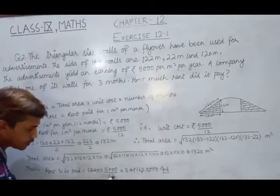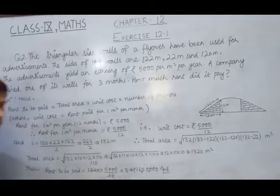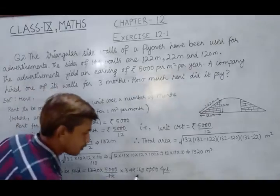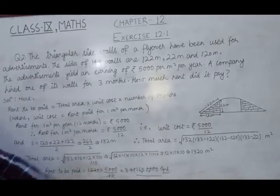We have 1320 divided by 12 is 110. And product of all these 3 values, we get Rs. 16,50,000. That's the required answer.